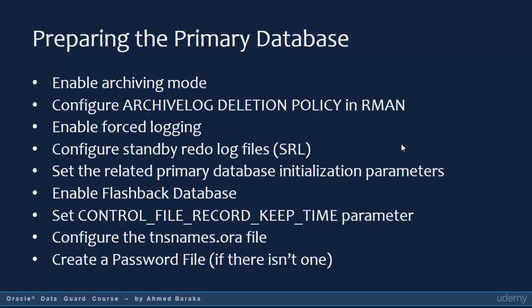To make the primary database ready for creating a standby database, you need to: enable archiving mode; configure the archive log deletion policy in RMAN — this is optional but practically necessary so archived redo log files don't accumulate forever; enable forced logging to prevent the database from skipping any logging operation; and configure standby redo logs (SRL) — optional in maximum performance mode but highly recommended.